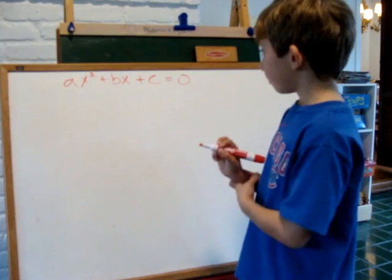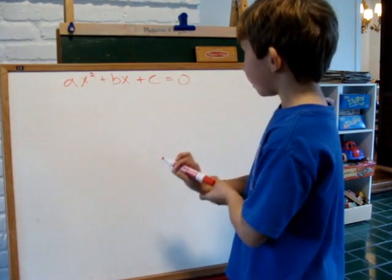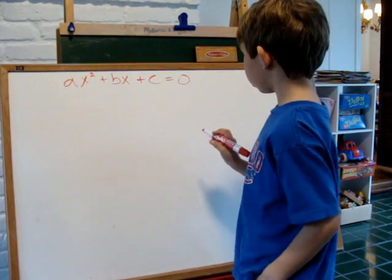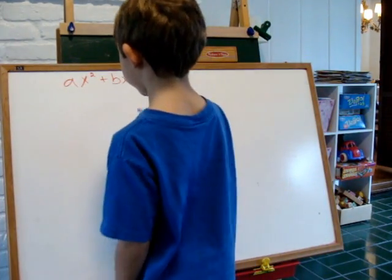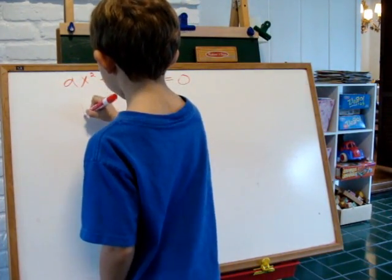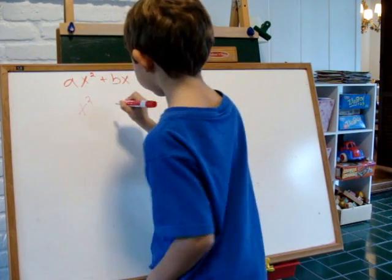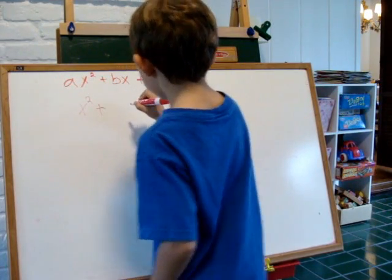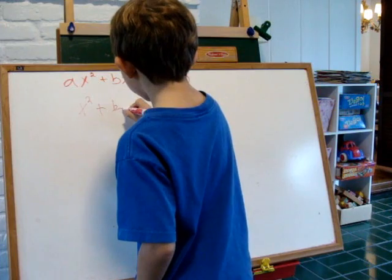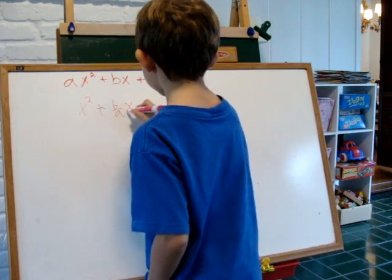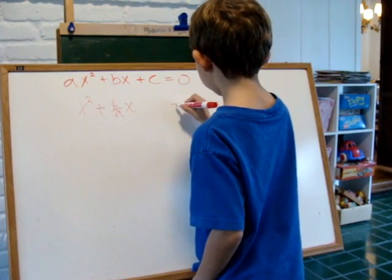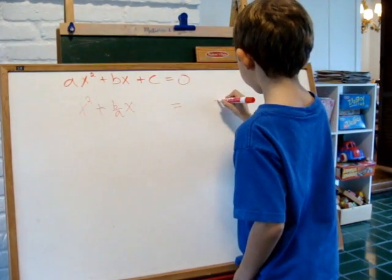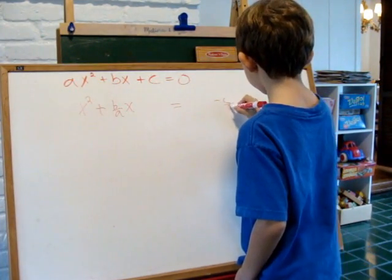First we divide everything by a and move the constant term to the right side of the equation. We get x squared plus b over ax equals negative c over a.